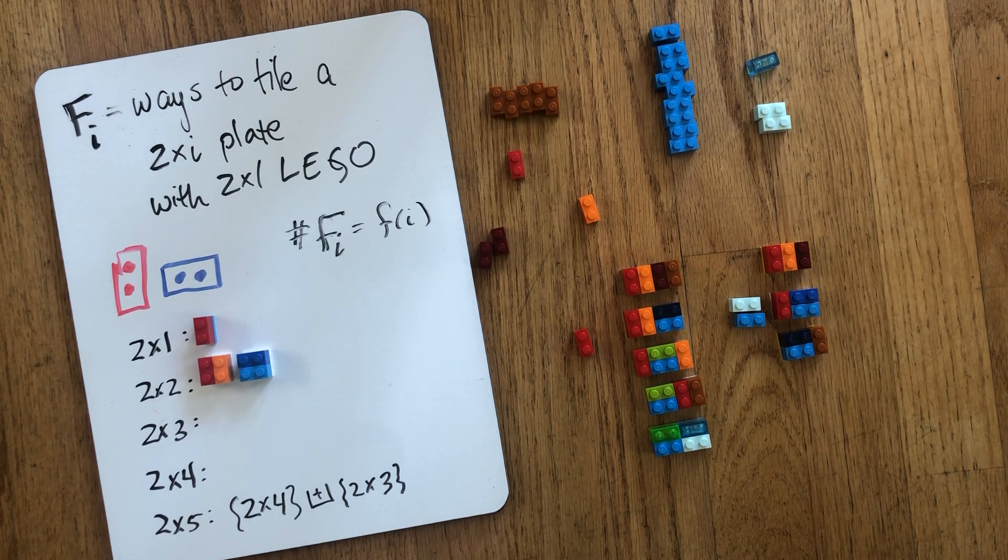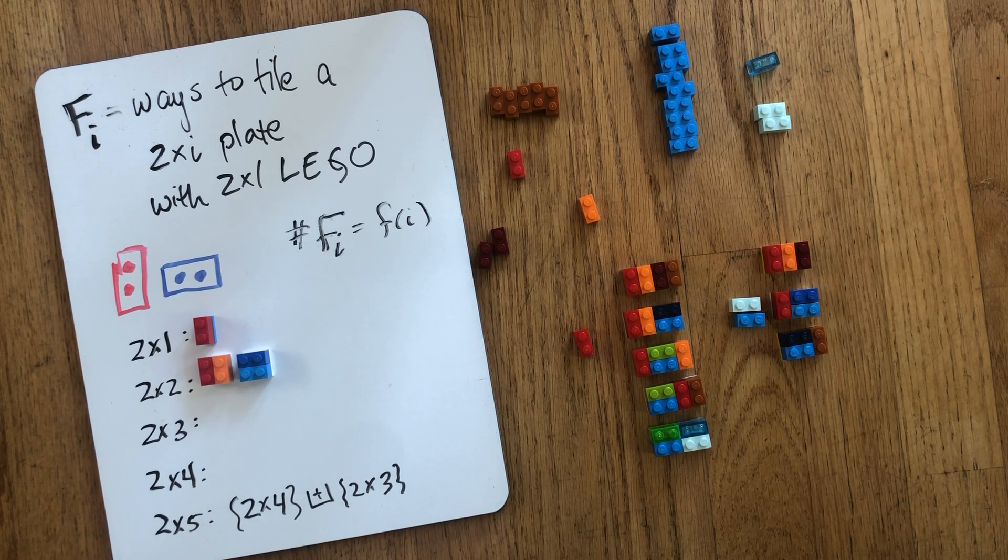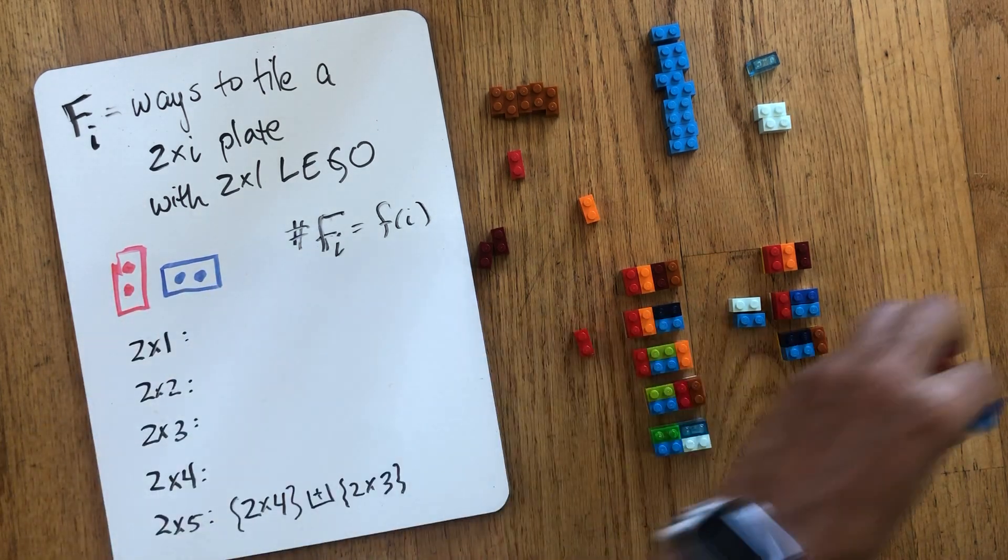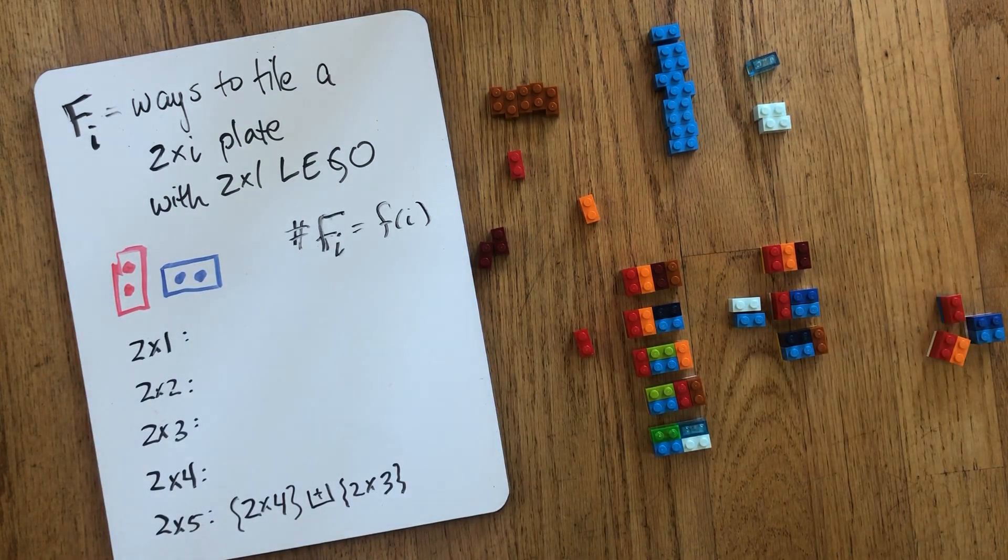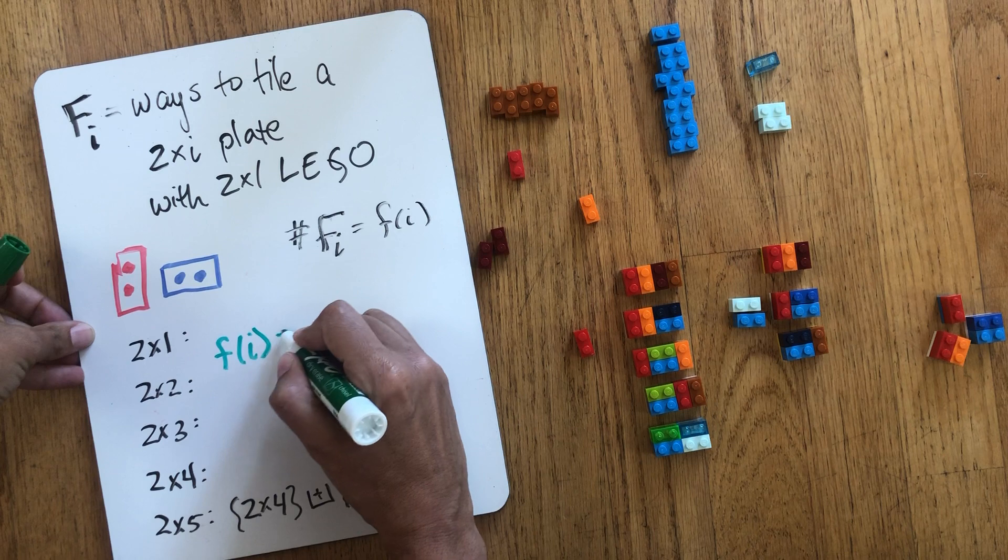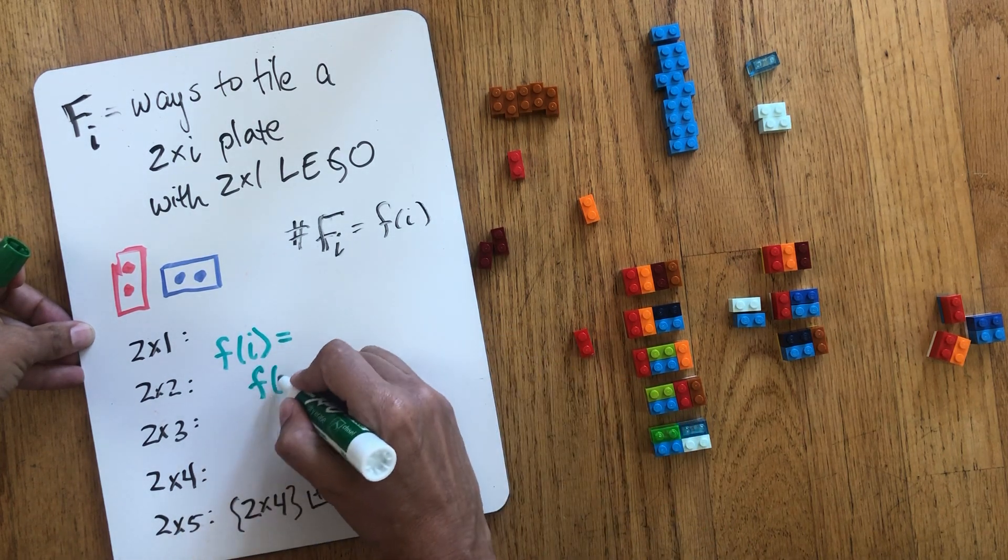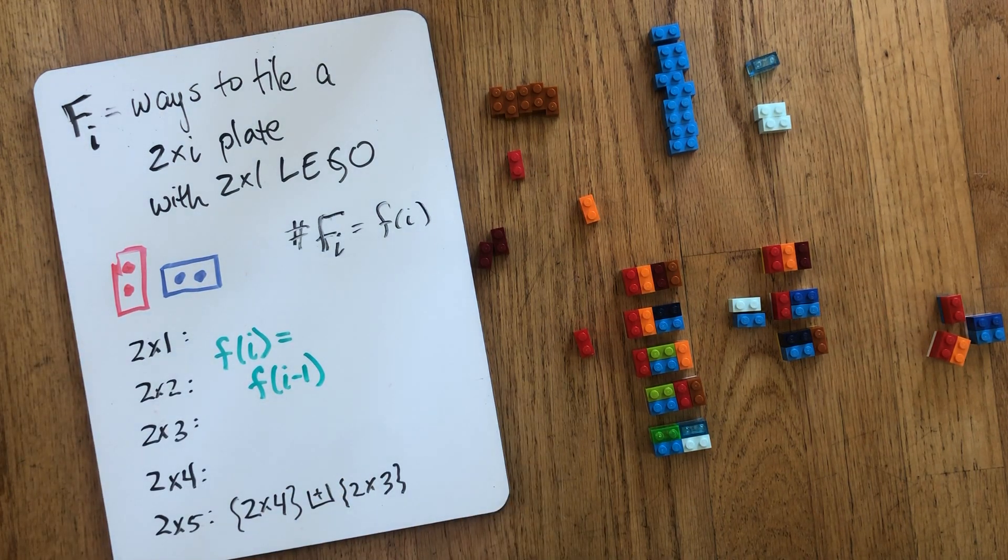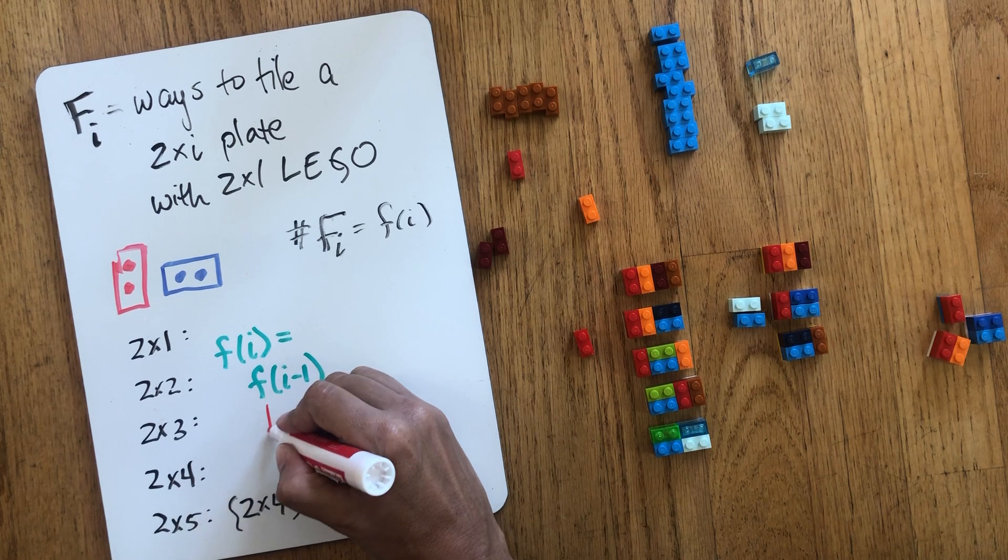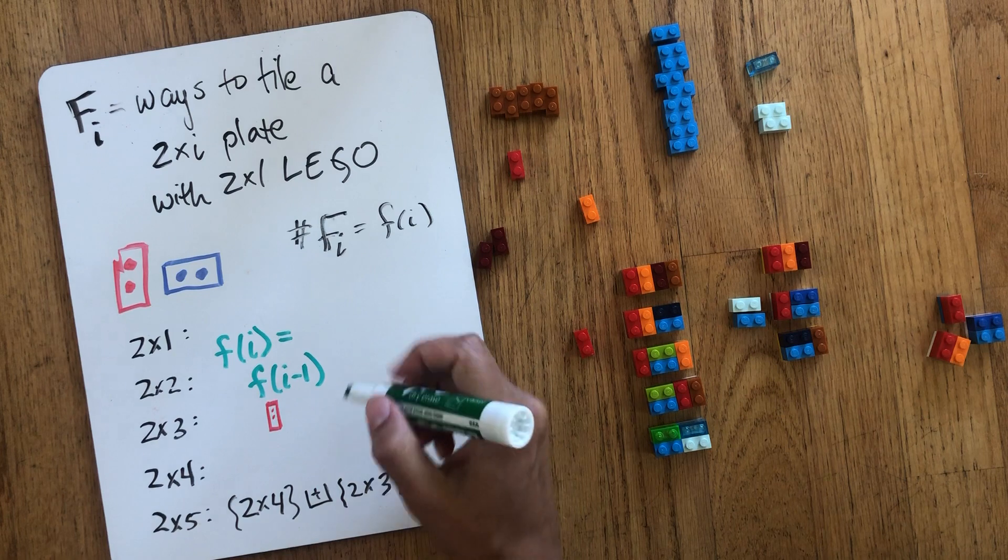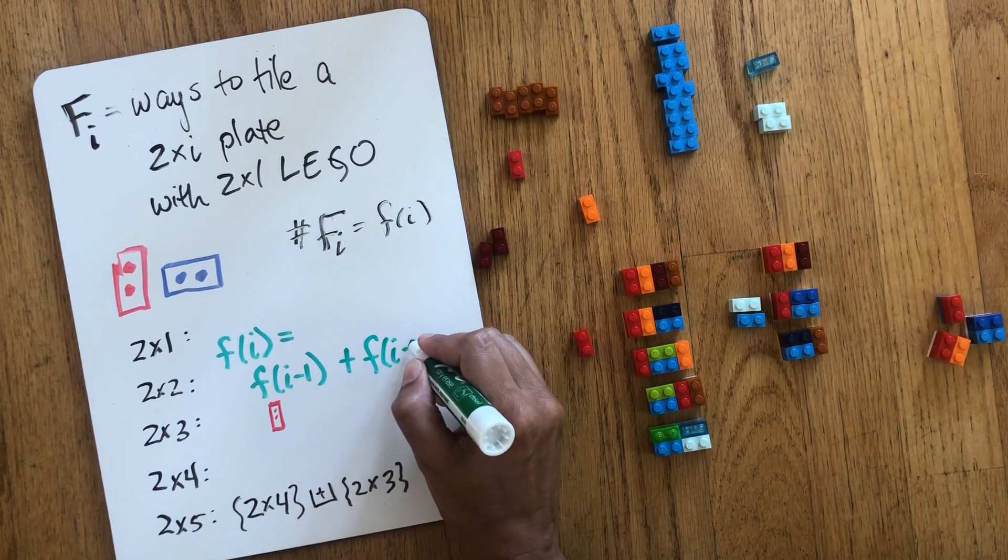So that gets me at least a way to compute the numbers a lot faster. I can now do it just from a recurrence relation. So if we write that recurrence relation down, maybe we'll clear space here on the bricks. The recurrence relation that we've discovered is that if I want to know what is the i-th thing in terms of the cardinalities, it's f of i minus one. That corresponds to me putting a vertical brick to start as my first brick, a vertical brick.